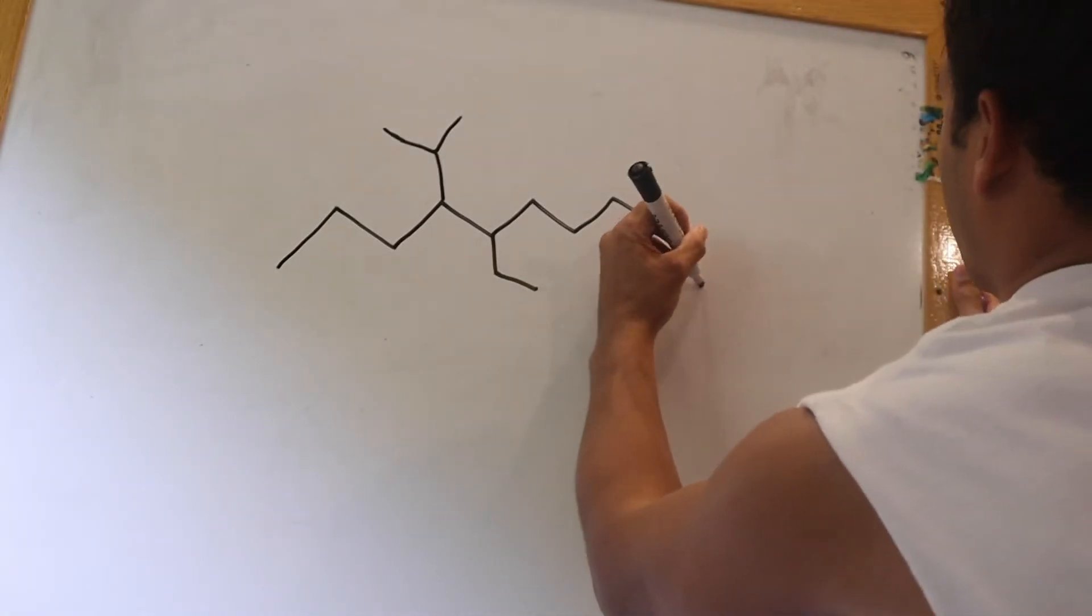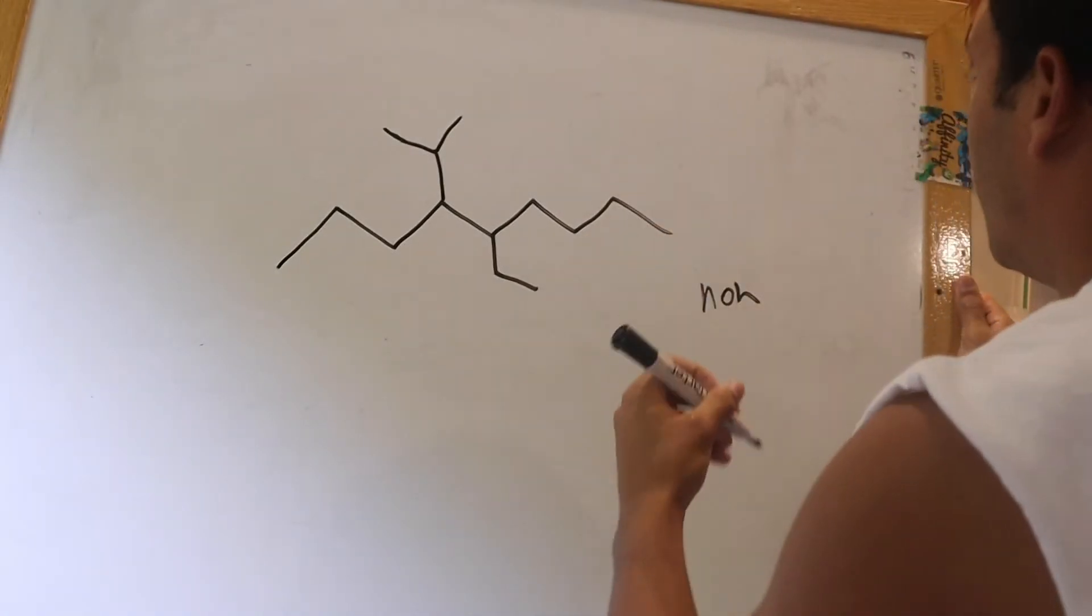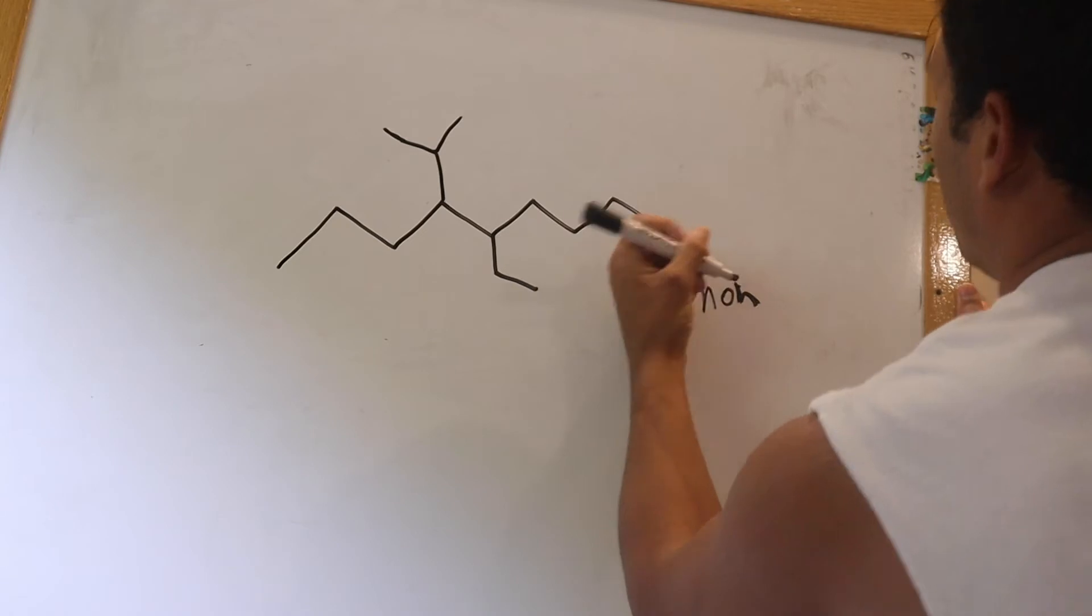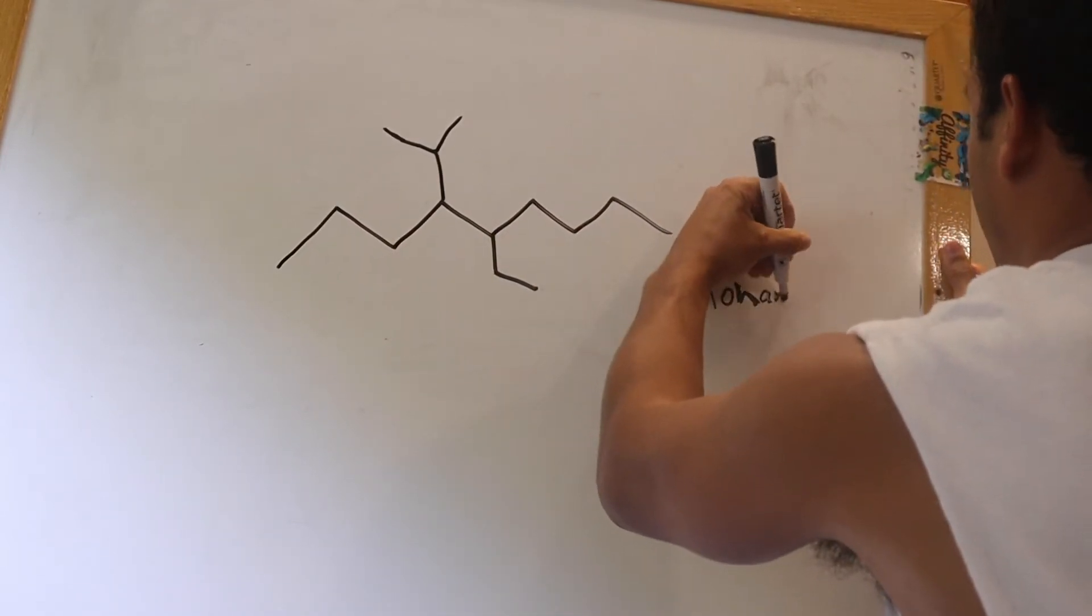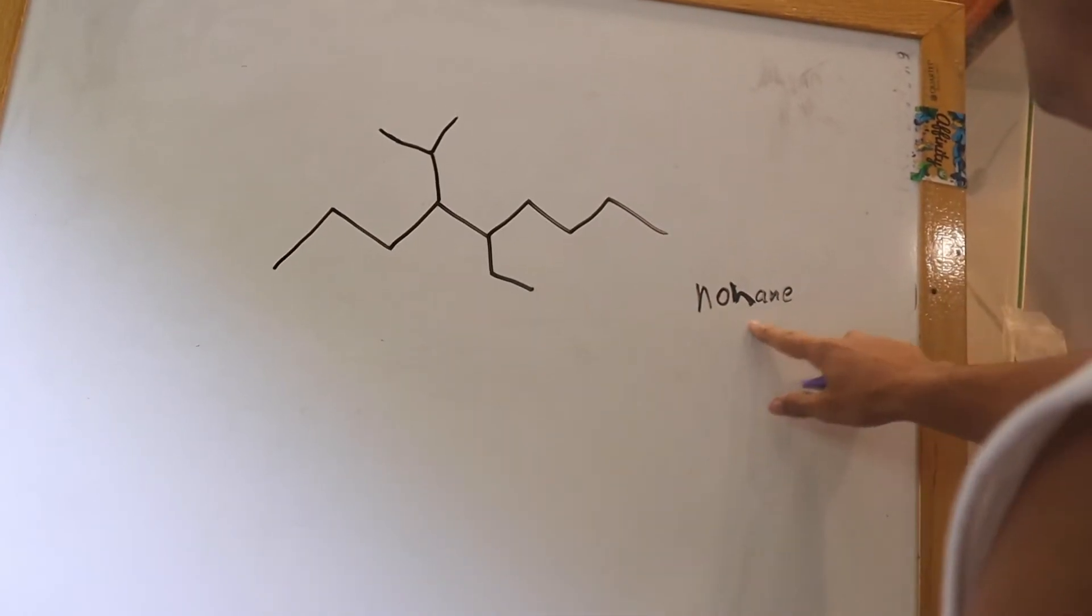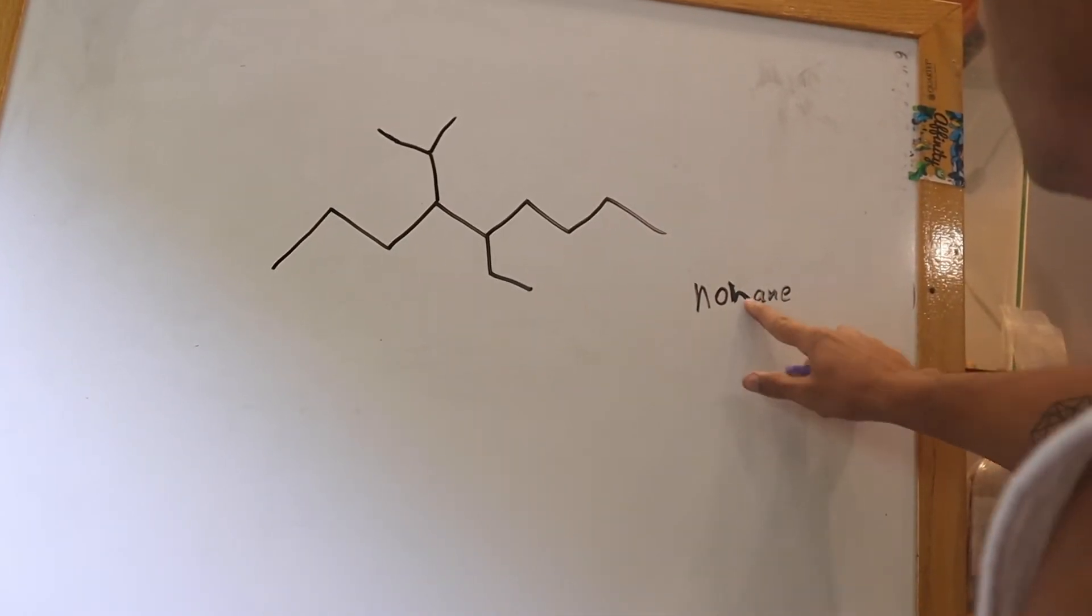9 carbons means you're going to designate the first part of the name N-O-N. We know that there's single bonds between all the carbons in that chain, so it's going to be an alkane structure. So nonane is going to be the last part of the name.